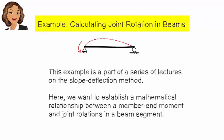Calculating Joint Rotation in Beams. This example is a part of a series of lectures on the slope deflection method. Here we want to establish a mathematical relationship between a member end moment and joint rotations in a beam segment.